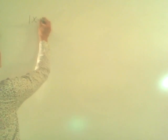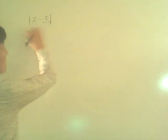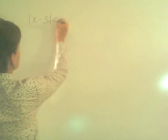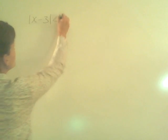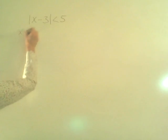How do we write an absolute value inequality for a graph or for a word problem? Let's first look at a simple absolute value inequality. Let's say that I have the absolute value of x minus 3 is less than 5. Let's go through the process of solving this.